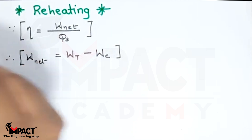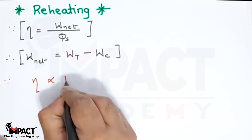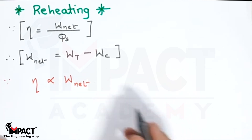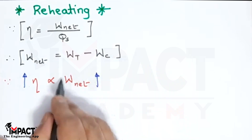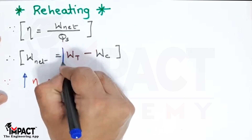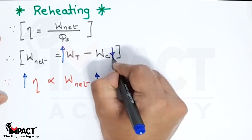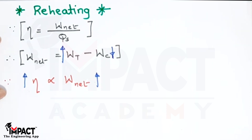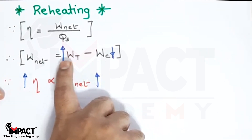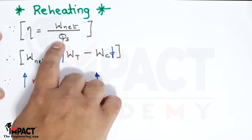Efficiency is directly proportional to W_net, so if we want to increase efficiency, W_net has to be increased. The method of increasing net work is either to increase turbine work or to decrease the work consumed by the compressor. In a gas turbine, 70 to 80 percent of the work produced by the turbine is consumed by the compressor, so decreasing compressor work or increasing turbine work will increase net work.